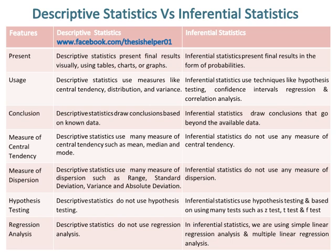Descriptive statistics use measures of dispersion such as range, standard deviation, variance, and absolute deviation, while inferential statistics do not use any measure of dispersion. Descriptive statistics do not use hypothesis testing, while inferential statistics use hypothesis testing based on many tests such as Z test, T test, and F test.